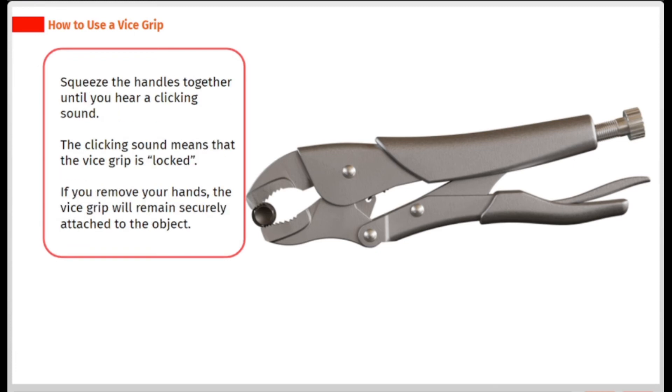Squeeze the handles together until you hear a clicking sound. The clicking sound means that the vice grip is locked. If you remove your hands, the vice grip will remain securely attached to the object.